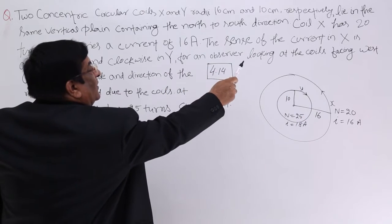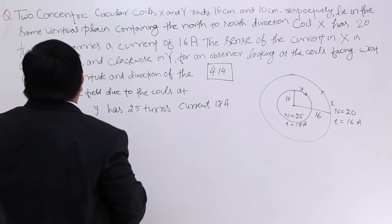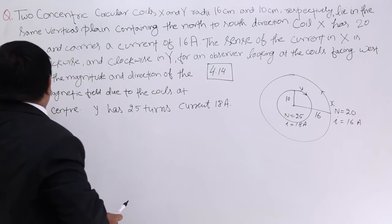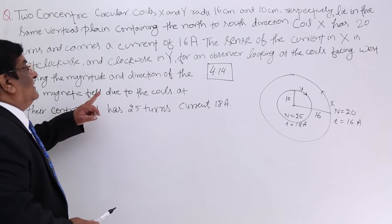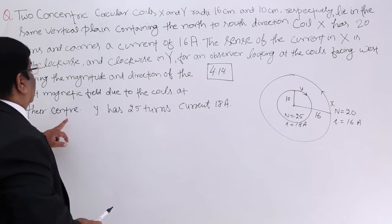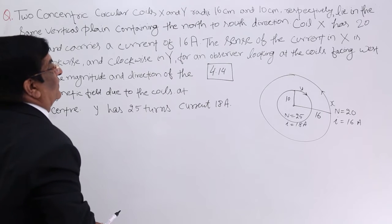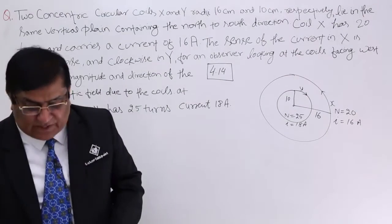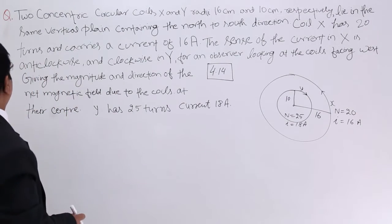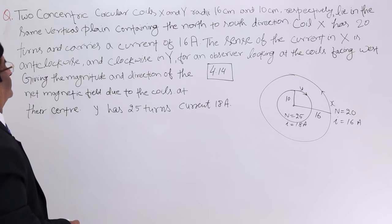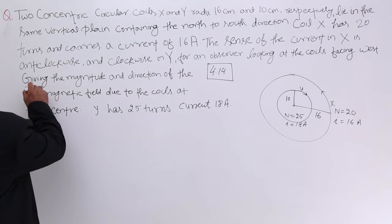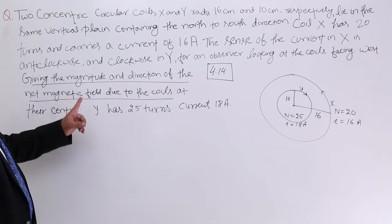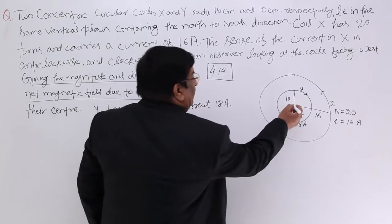For an observer looking at the coils facing west, we have to find the magnitude and direction of the net magnetic field due to the coils at their centre.